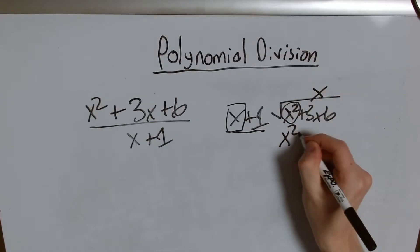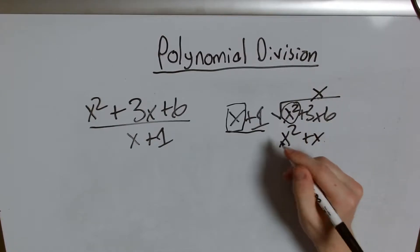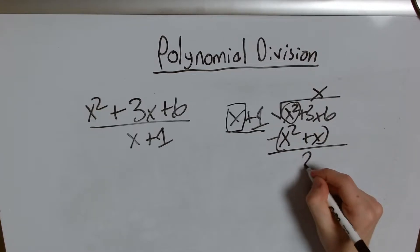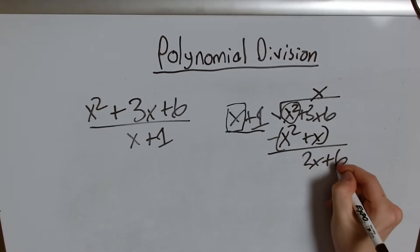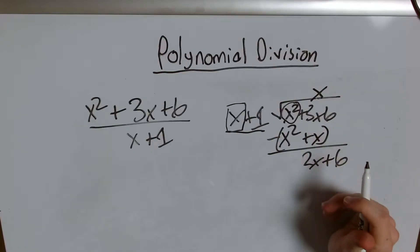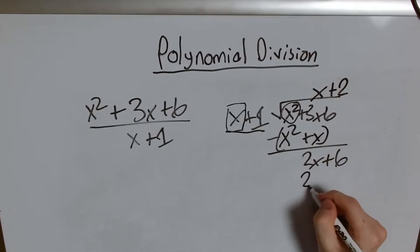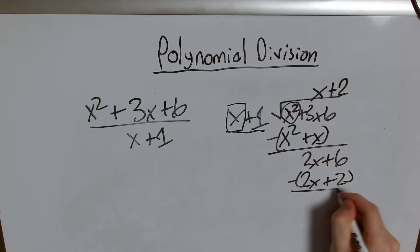Because then I'll have x squared plus x. Subtracting that I have 2x plus 6. We do the process again. What do I have to multiply x by to get 2x? That's also simple. A 2. So now I have 2x plus 2. I subtract and I have 4.